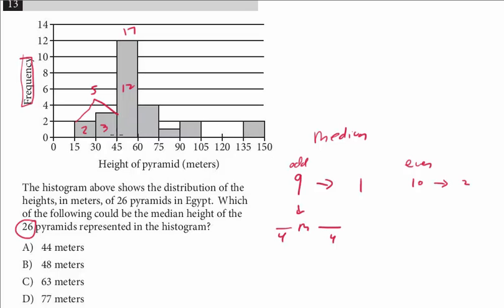You could have started on this way, but this one I think was a little faster. There were just two instead of these four. And so we said which of the following could be the median. We know it could be between 45 and 60. And so the answer here is B.